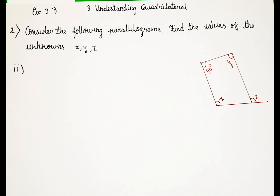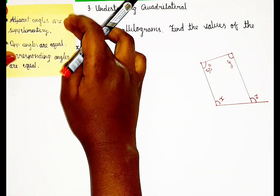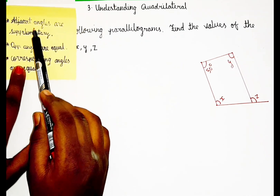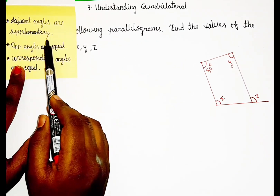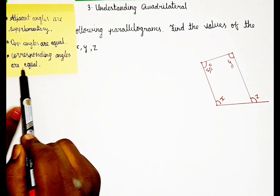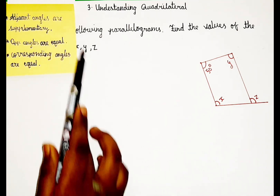So how are we going to find it? Here you should know a few ideas — like a formula. These formulas are important for solving this. Remember: adjacent angles are supplementary, opposite angles are equal, and corresponding angles are equal. If you guys know this, you can solve this question easily.